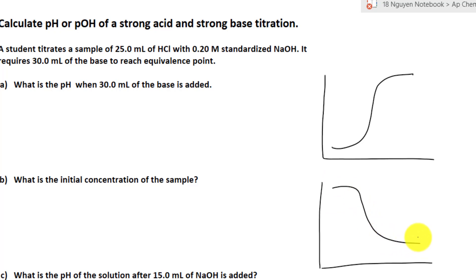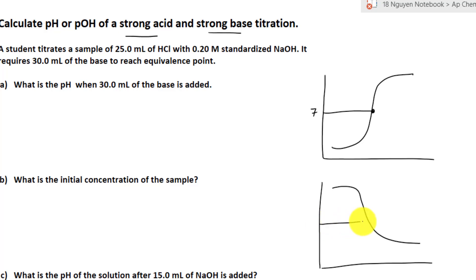The most difficult part of titration is calculating the pH or the pOH of the solution. That is because you can titrate different types of acid and base, and they have different ways of calculating the pH. For example, the strong acid and strong base titration always have this characteristic: at the equivalent point, the pH is always 7, for either strong base or strong acid titration.